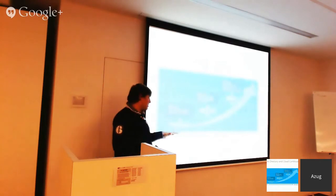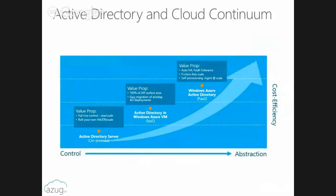Active Directory has a continuum depending on the level of abstraction and cost effectiveness you want. If you're a control freak, you control everything — scalable, highly available, but you do it yourself. If you want your Active Directory with a domain controller, create your domain, add machines to the domain, manage group policies — but want more cost effectiveness — you go to Active Directory in the cloud on a VM.